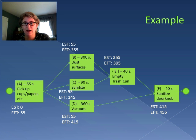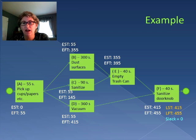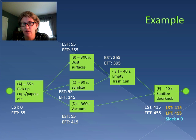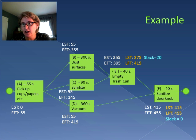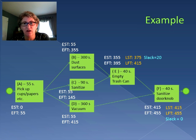That was our forward pass through the process flow diagram. Now let's do our backward pass. Activity F, since it's the last activity, finishes at 455, so the earliest it can start is 415 and the latest it can start is 415 as well — that activity has a slack of zero. Now let's go back to Activity E. Activity E must be finished by 415, so that's the latest finish time. When we subtract out the 40 seconds of the activity, the latest it can start is 375. So there is a difference of 20 seconds between the early start time and the late start time — that's the slack for Activity E.